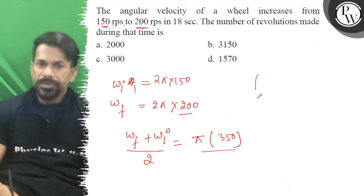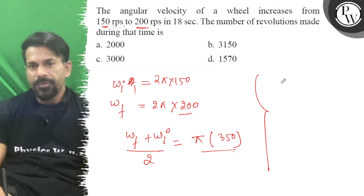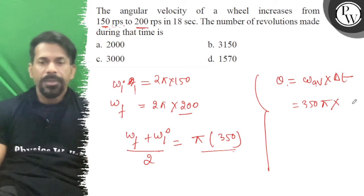This is the average angular velocity, and time will be Δt. So theta will be equal to omega average into total time duration Δt. So that is 350 into π, Δt is 18.